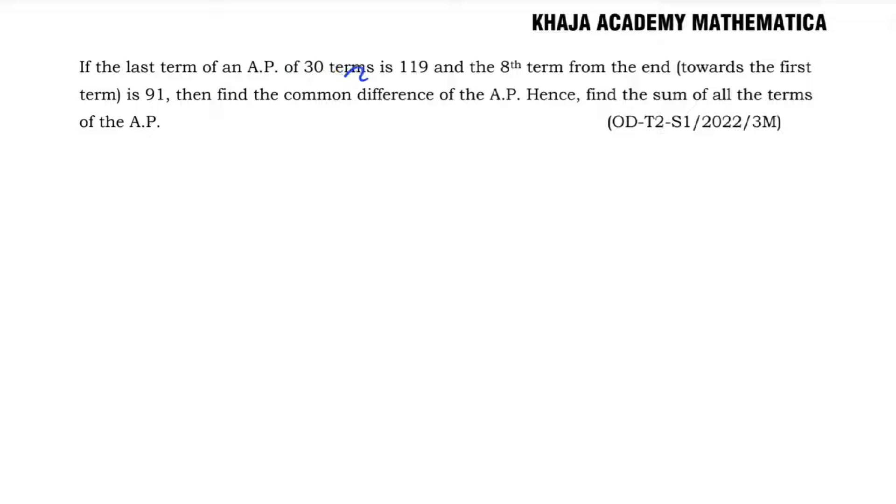If the last term of an AP of 30 terms is 119, and the 8th term from the end towards the first is 91, then find the common difference of the AP. Hence find the sum of all terms of the AP.